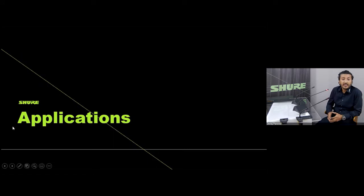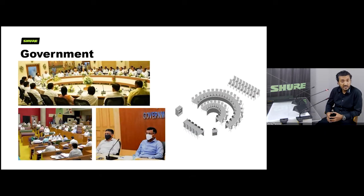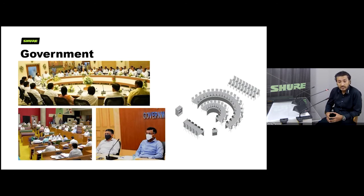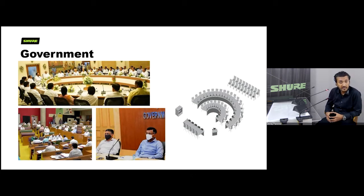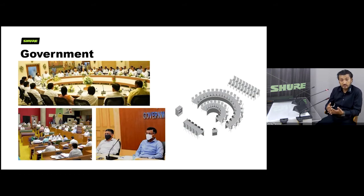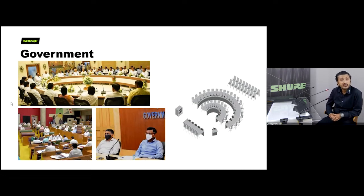These systems are used in different multi-seater spaces. The most common is the government and public sector, where you need sound reinforcement, meeting recording, voting, agenda-based meeting structure, and participant identification. When people walk into the room they need to be identified — which seat or which constituency they represent — so that different kinds of meetings can happen in the same space.